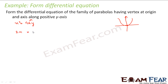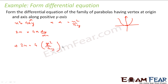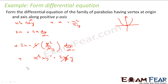Differentiating gives 2x = 4a·(dy/dx). We substitute a from the original equation: a = x²/4y. So 2x = (x²/y)·(dy/dx). The 4s cancel, giving x²·y' = 2xy. Cancelling x, we get xy' − 2y = 0, and that is the answer.